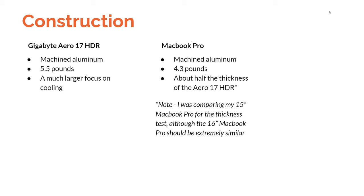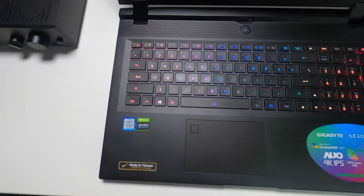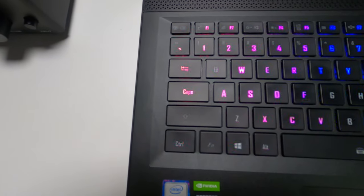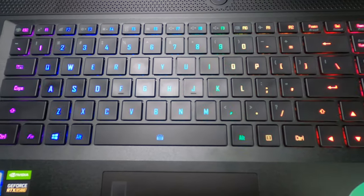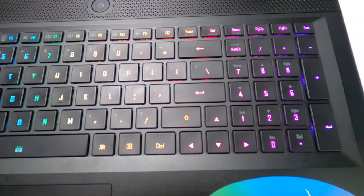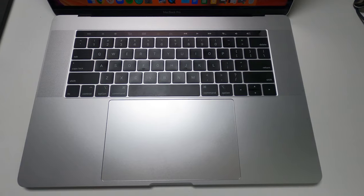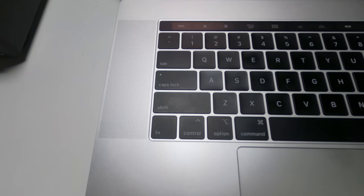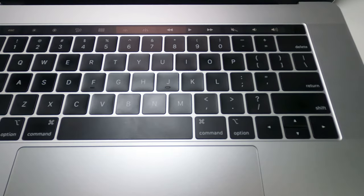When it comes to construction, both laptops are made out of machined aluminum, making them feel like very high-quality machines. A big difference though is that the Gigabyte is 5.5 pounds while the MacBook Pro is 4.3 pounds — a noticeable difference. The Gigabyte Aero 17 is a 17-inch laptop, really intended as a desktop replacement, so it's not designed to be carried everywhere. If you want something more portable, their 15-inch model might be a better fit.